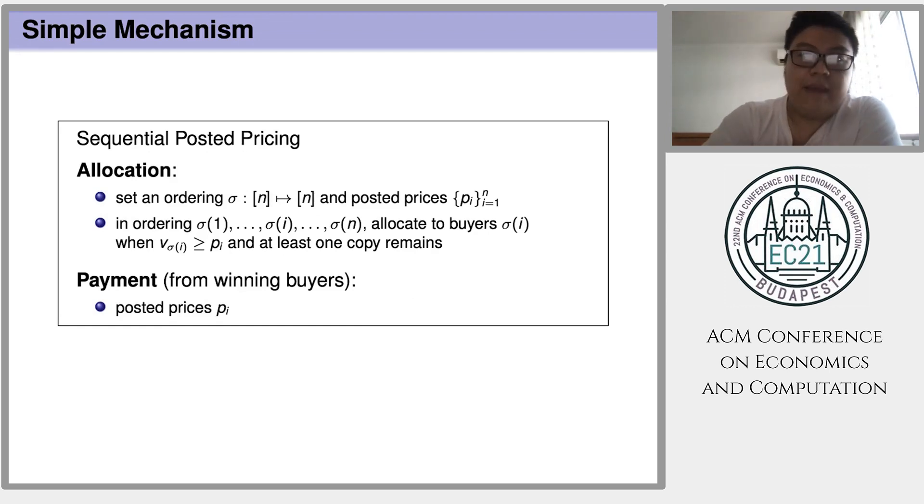The second simple mechanism we will consider is sequential posted pricing. In this mechanism, the seller first sets an ordering over all bidders and chooses posted prices PI for each buyer I. Then, in the chosen ordering, the buyers come one by one. Once buyer sigma I comes, if he is willing to pay the posted price PI and at least one copy of the item remains unallocated, then he will win and pays the posted price.